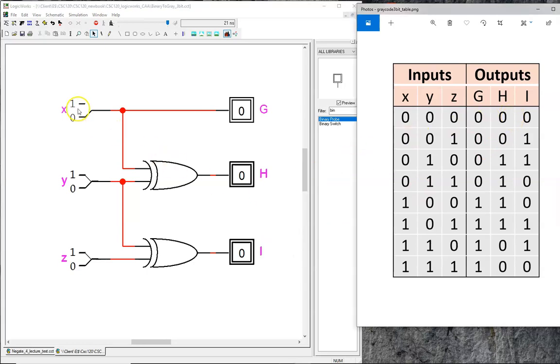On the second row, 0, 0, 1 leads to 0, 0, 1. Again, a match.